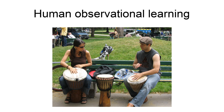Albert Bandura, who is known for the classic Bobo doll experiment, identified this basic form of learning in 1961. The importance of observational learning lies in helping individuals, especially children, acquire new responses by observing others' behavior. Bandura states that people's behavior could be determined by their environment, and that observational learning occurs through observing both negative and positive behaviors. Bandura believes in reciprocal determinism, in which the environment can influence people's behavior and vice versa.